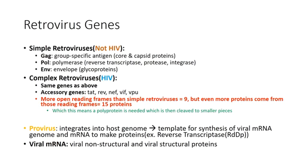Retroviruses are viruses that have an RNA genome. Once they enter into cells, they take their RNA genome and turn it into a DNA genome, which can then be incorporated into the host cell's genetic material. There are two types of retroviruses: simple and complex. A simple retrovirus, like HTLV (human T-cell lymphotrophic virus), has a GAG gene encoding core and capsid proteins, a POL gene creating polymerase, reverse transcriptase, protease, and integrase, and an ENV gene for envelope glycoproteins important for attachment.